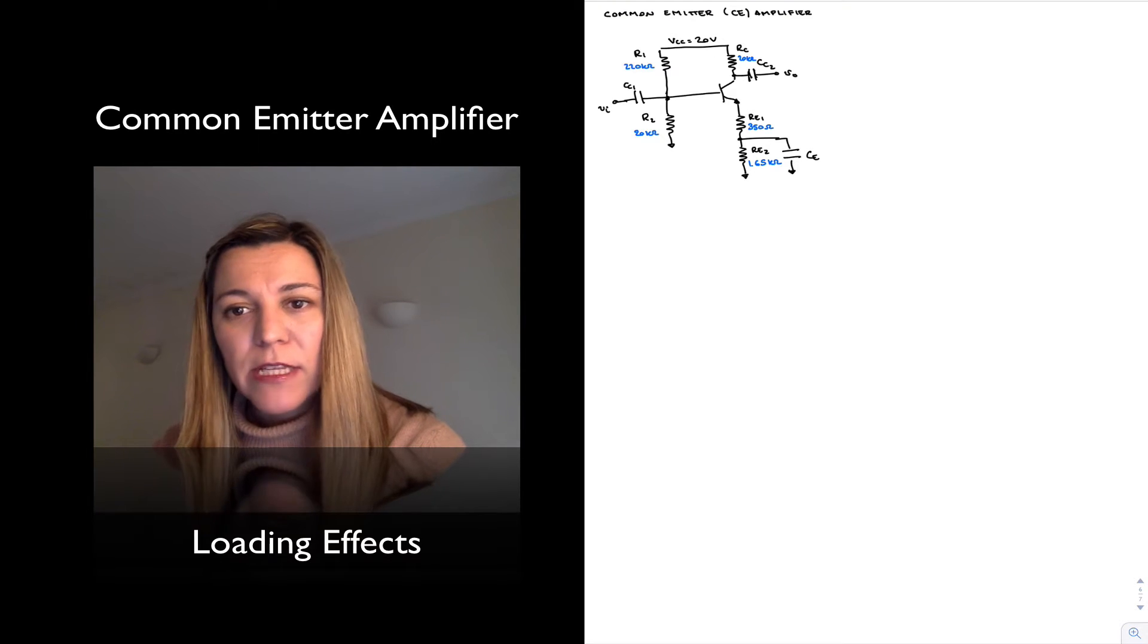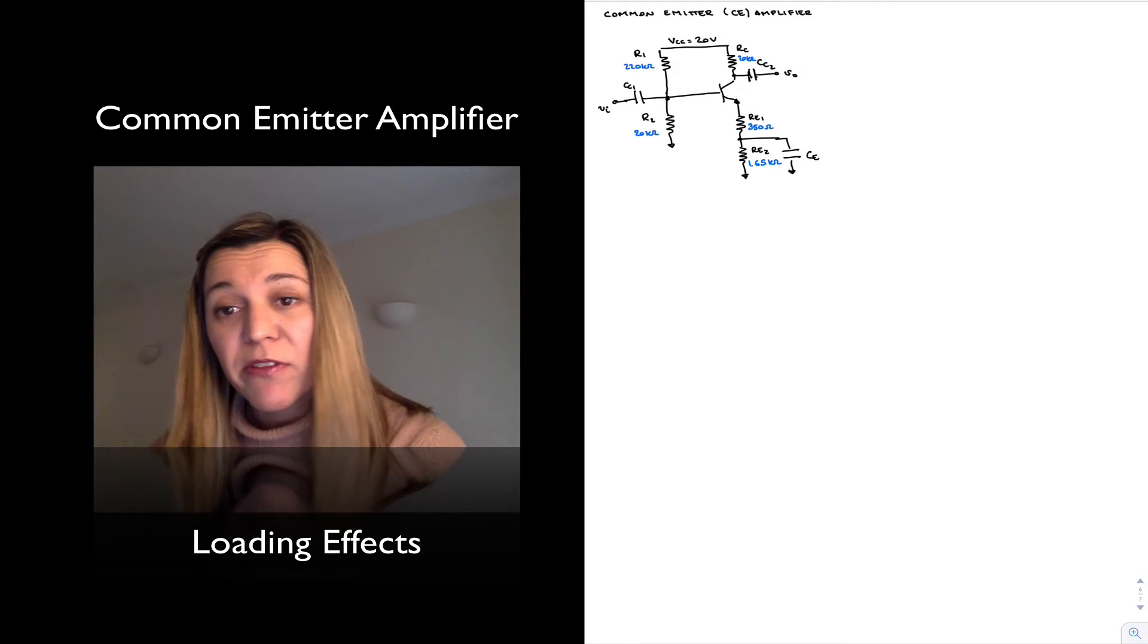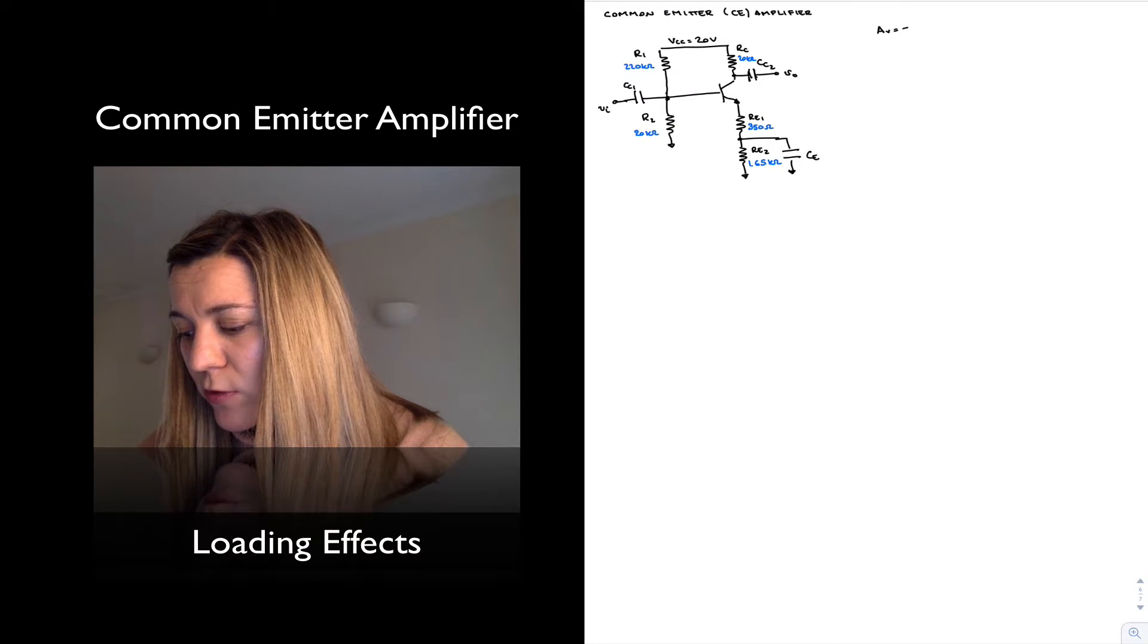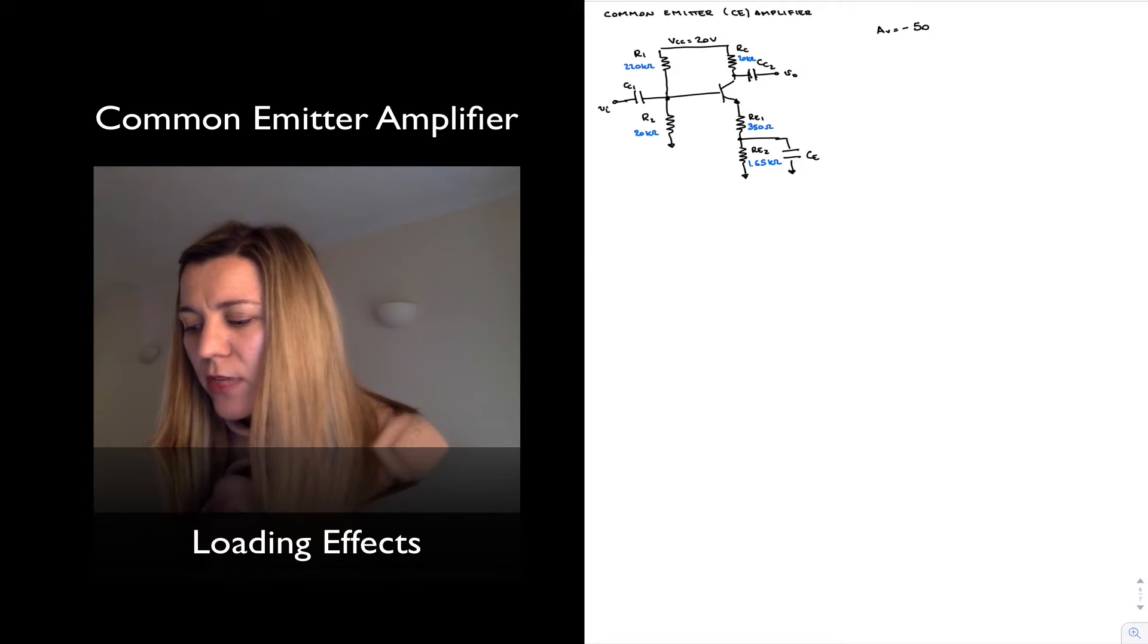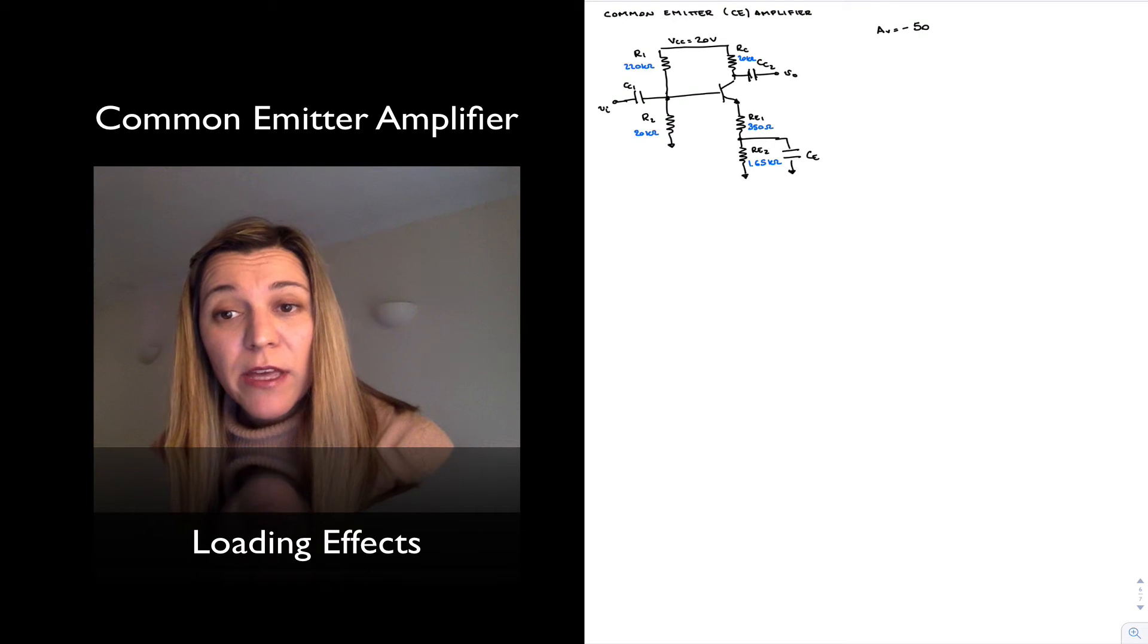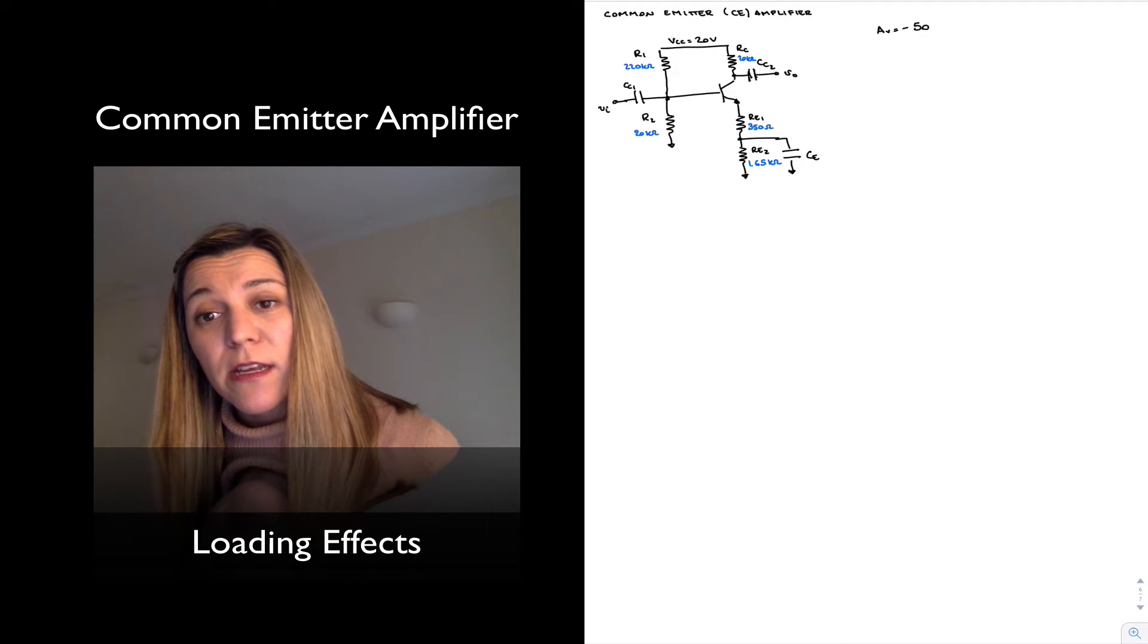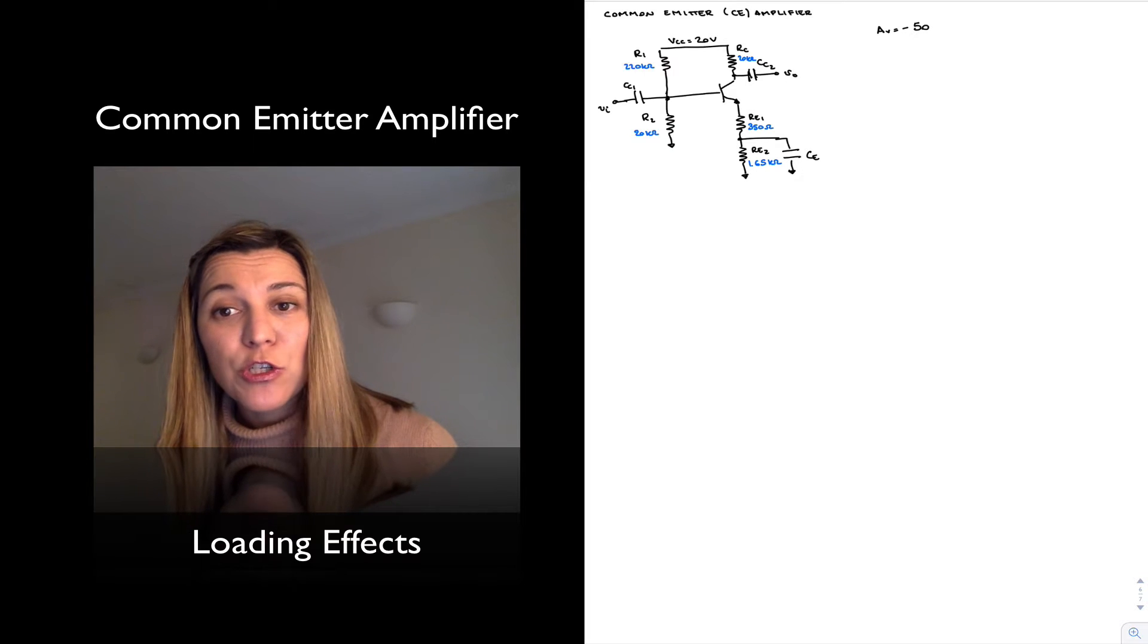First of all, we've already seen this was a voltage amplifier that we've designed to have a gain of negative 50 voltage gain. And so the expected behavior is that if I provide an input signal, what I'm going to get is an inverted amplified version of that input signal, where the amplitude of the output signal should be 50 times the amplitude of the input signal.